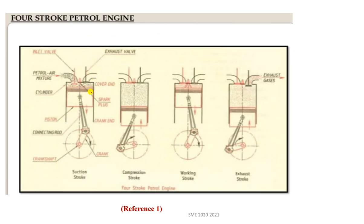This is the layout of the four-stroke petrol engine showing the cylinder block, inlet and outlet valves, connecting rod, crank, crank pin, crankshaft, and piston. There are four strokes: the first is the suction stroke, the second is the compression stroke, the third is the working or expansion stroke, and the fourth is the exhaust stroke.